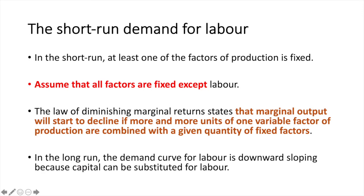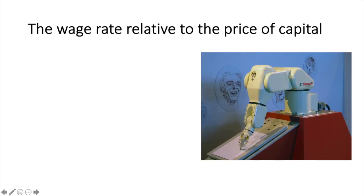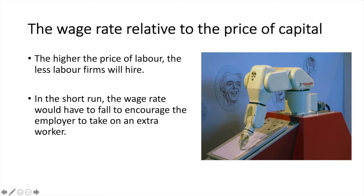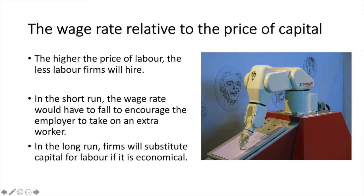In the long run, the demand curve for labour is downward sloping because capital can be substituted for labour. Furthermore, in the short run, a firm's capital is fixed. Therefore the higher the price of labour, the less labour firms will hire. In the short run, the wage rate would have to fall to encourage the employer to take on an extra worker. In the long run, firms will substitute capital for labour if it is economical.